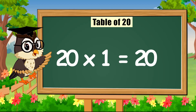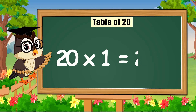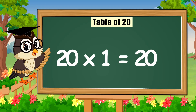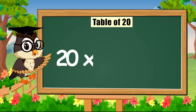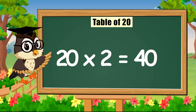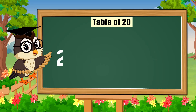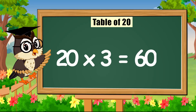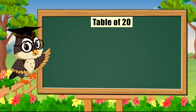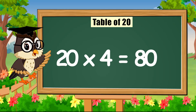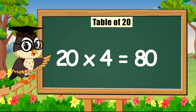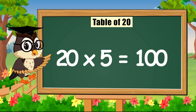Come on! 20 times 1 is 20. 20 times 2 is 40. 20 times 3 is 60. 20 times 4 is 80. 20 times 5 is 100.